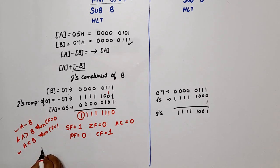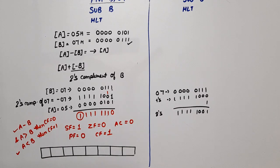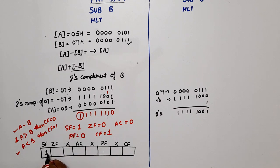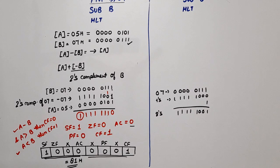Now what is the content of the flag register? The 8-bit flag register has: sign flag, Z flag, don't care, auxiliary carry, don't care, parity flag, don't care, and carry flag. Putting in the values: SF=1, ZF=0, don't care=0, AC=0, don't care=0, PF=0, don't care=0, CF=1. Combining in groups of four: 1000 = 8 and 0001 = 1, so the flag register content is 81H.